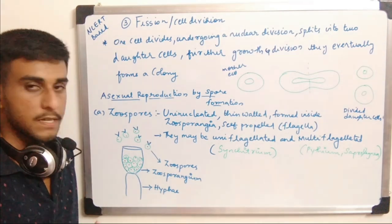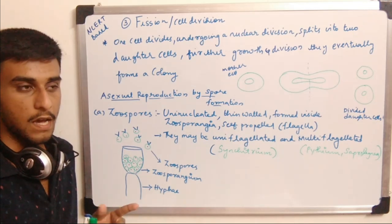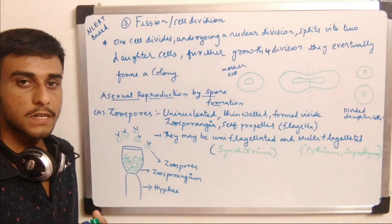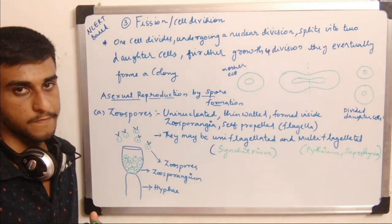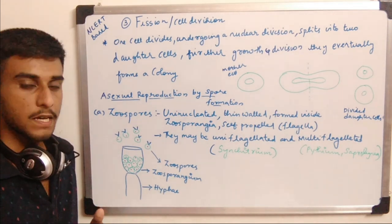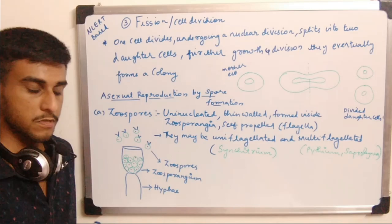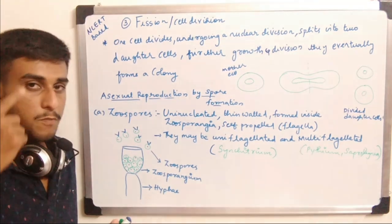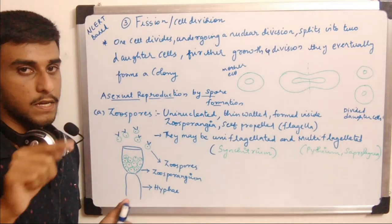Asexual reproduction in fungi is by budding, fragmentation, fission, and also by the formation of spores. Fungi which produce spores asexually produce mitospores, which skip the process of meiosis and produce spores mitotically — 2n to 2n.